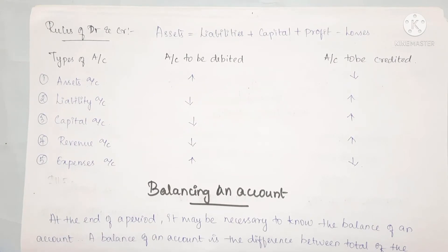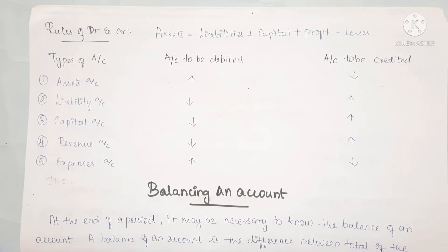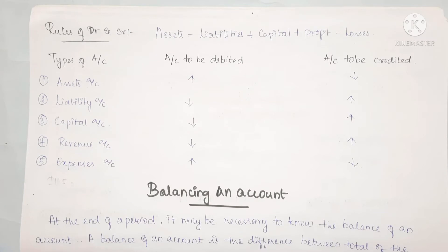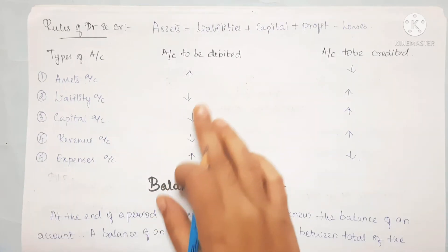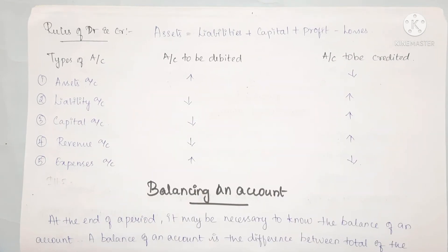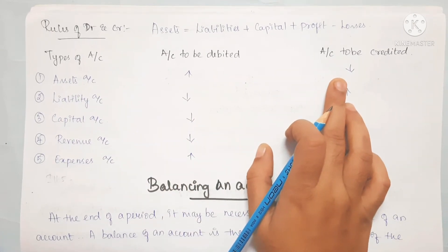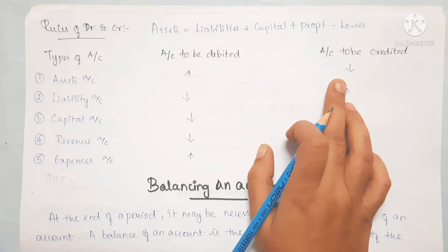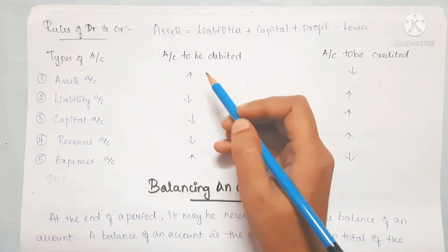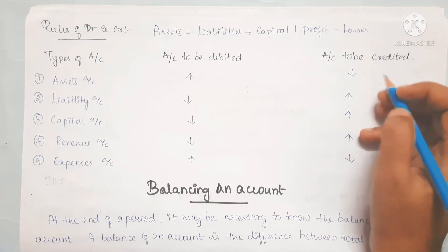So, what are assets? Assets are economic resources of an enterprise. For example: land, building, plant and machinery, furniture, patent rights, inventory, bank, and cash. When assets increase, we debit; when assets decrease, we credit.